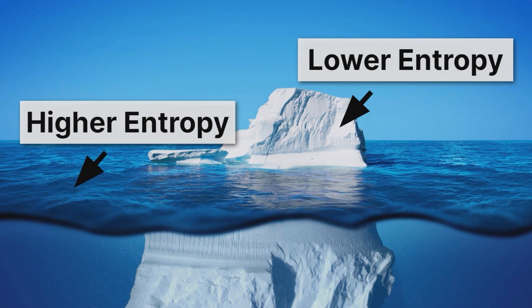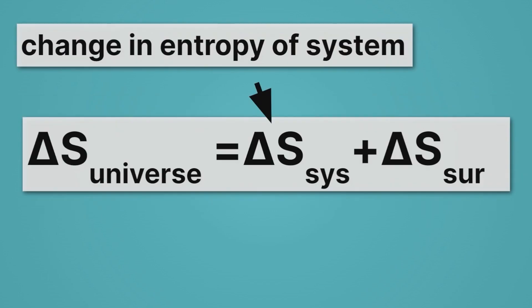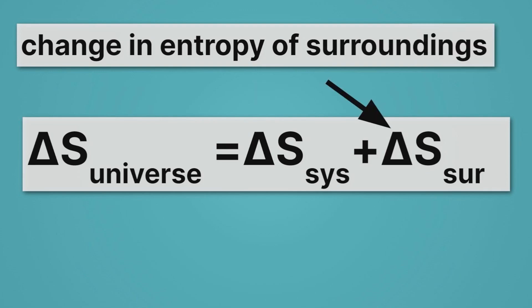Remember, entropy can decrease in some ways so long as it increases in other ways. And now that we've introduced system and surroundings, we can understand that a little more clearly. The change in entropy of the universe is equal to the change in entropy of the system plus the change in entropy of the surroundings.